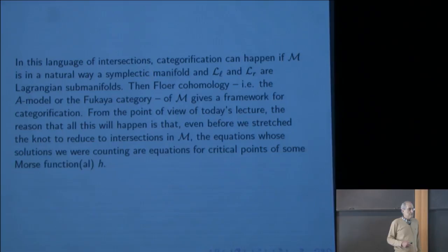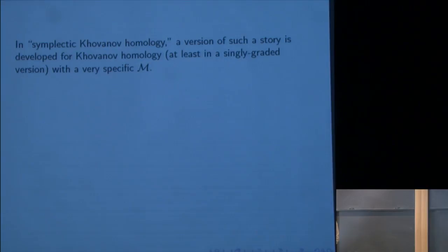In symplectic Khovanov homology, a version of this story is developed for Khovanov homology, at least in a singly graded version, with a very specific M. I'll give a description of this M that was proposed by Kamnitzer and exploited in a mirror version by Caldas and Kamnitzer. It was an important clue in my work. M can be understood as a space of Hecke modifications.